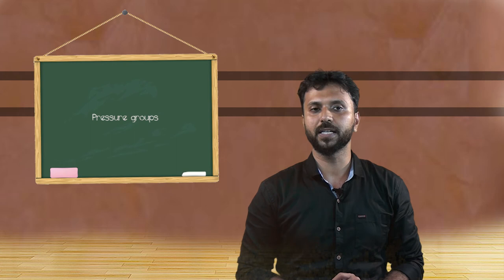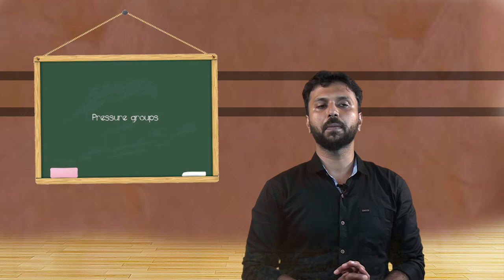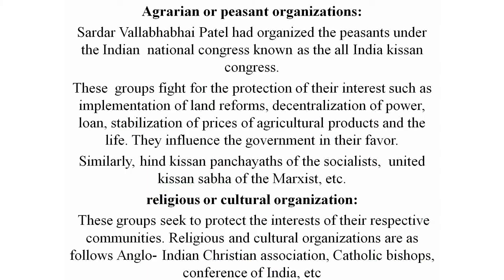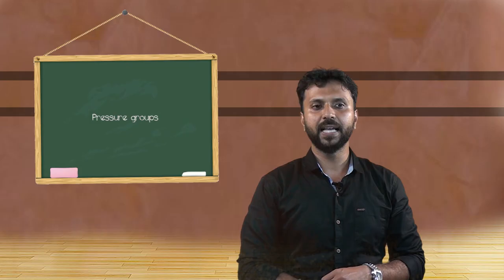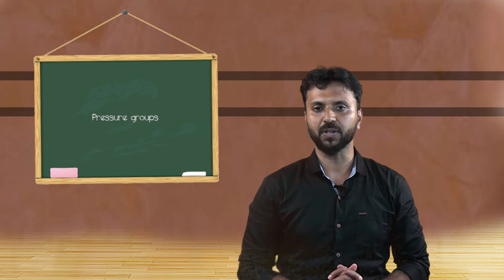Agrarian and peasant organizations. Sardar Vallabhbhai Patel organized peasants under the Indian National Congress, known as the All India Kisan Congress. This group fights for the protection of interests such as implementation of land reforms, decentralization of powers, loans, and stabilization of prices of agricultural products. They influence the government in their favor. Similarly, the Hind Kisan Panchayat of the Socialists and United Kisan Sabha of the Marxists are other examples.